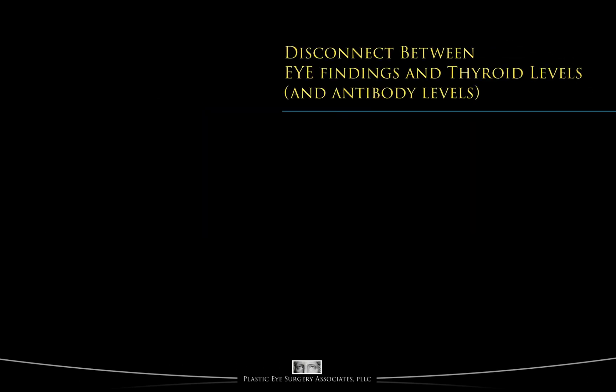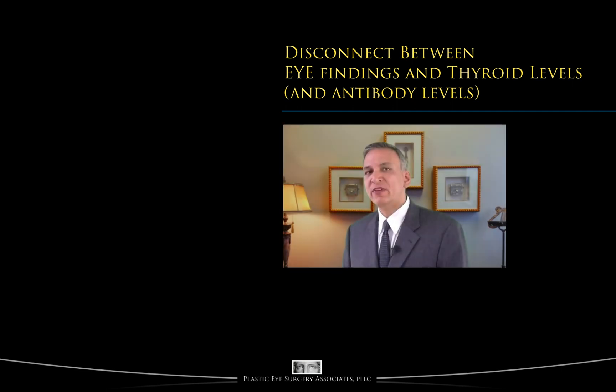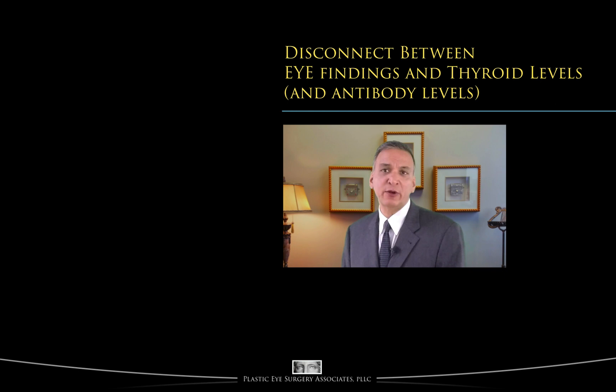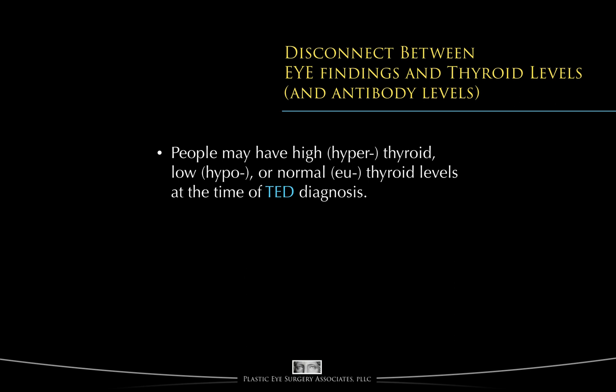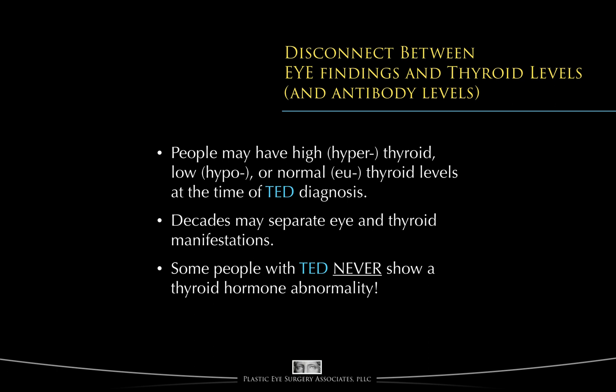There's a disconnect between eye findings and thyroid levels and autoimmune thyroid antibody levels. In previous videos, we've already discussed how there is no direct correlation or connection between the presence or severity of thyroid eye disease and thyroid hormone blood levels, or even commercially available autoimmune antibodies directed against the thyroid system. At the time that TED is diagnosed, people may have hyper, high, hypo, low, or even normal thyroid hormone levels. If someone has both abnormal thyroid hormone levels and thyroid eye disease, decades may separate these two findings. About 20% of people who have TED never show a thyroid hormone abnormality in their blood.